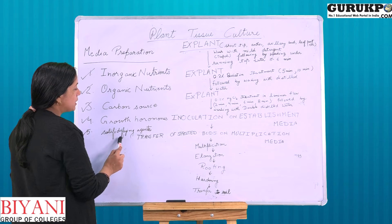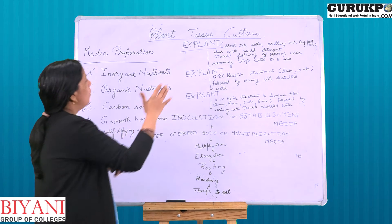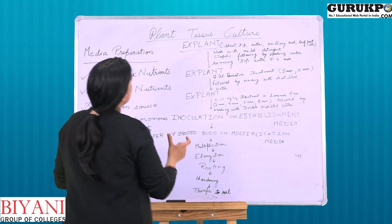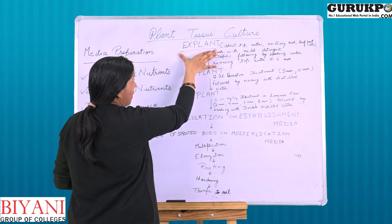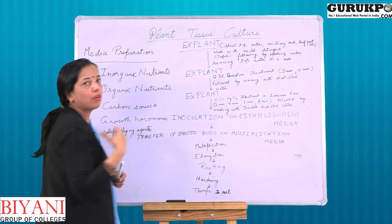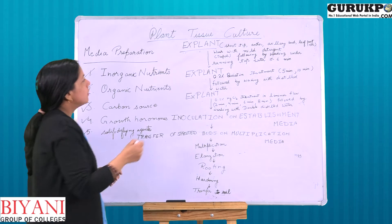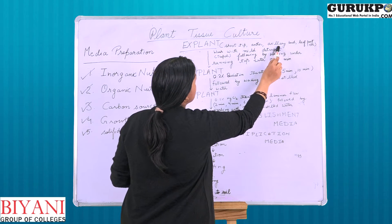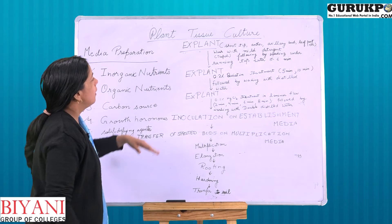The solidifying agent used is agar-agar. Now, these are the steps used in the plant tissue culture technique. First, we take the explant — the plant part from which we want to develop a whole plant. The plant part can be the shoot tip, anther, axillary bud, leaf part, or any other part.